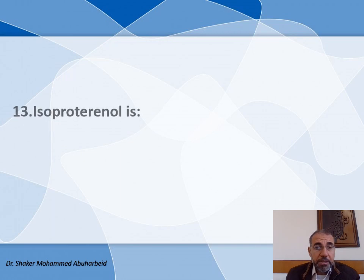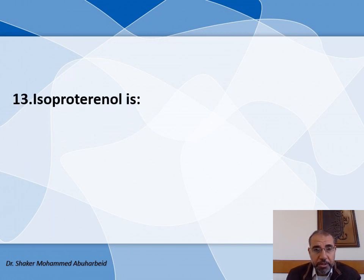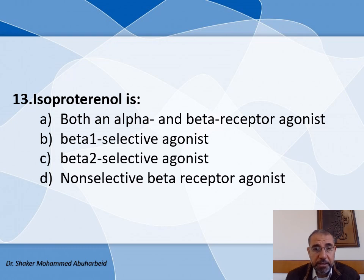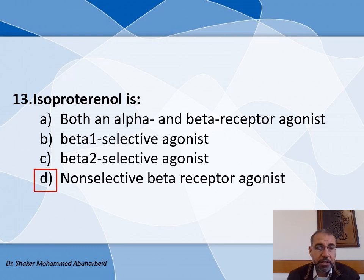Question number thirteen: Isoproterenol — what is the selectivity of this drug? The choices are: A) Both alpha and beta receptor agonist, B) Beta-1 selective agonist, C) Beta-2 selective agonist, and D) Non-selective beta receptor agonist. The correct answer is D — Isoproterenol is a non-selective beta receptor agonist.